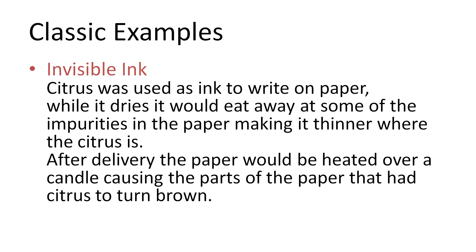One of the most commonly known forms of hidden messages is invisible ink. Citrus is used as ink for writing on paper. Generally one would write the invisible message on a letter already containing a non-relevant message. While the citrus dries, it eats away at the paper's impurities, leaving the paper thinner where the citrus is. Upon delivering the letter, the paper would be heated over a candle or under a hot light, causing the now thinner parts of the paper to turn brown. You can even try this at home — most school science classes still do this experiment.